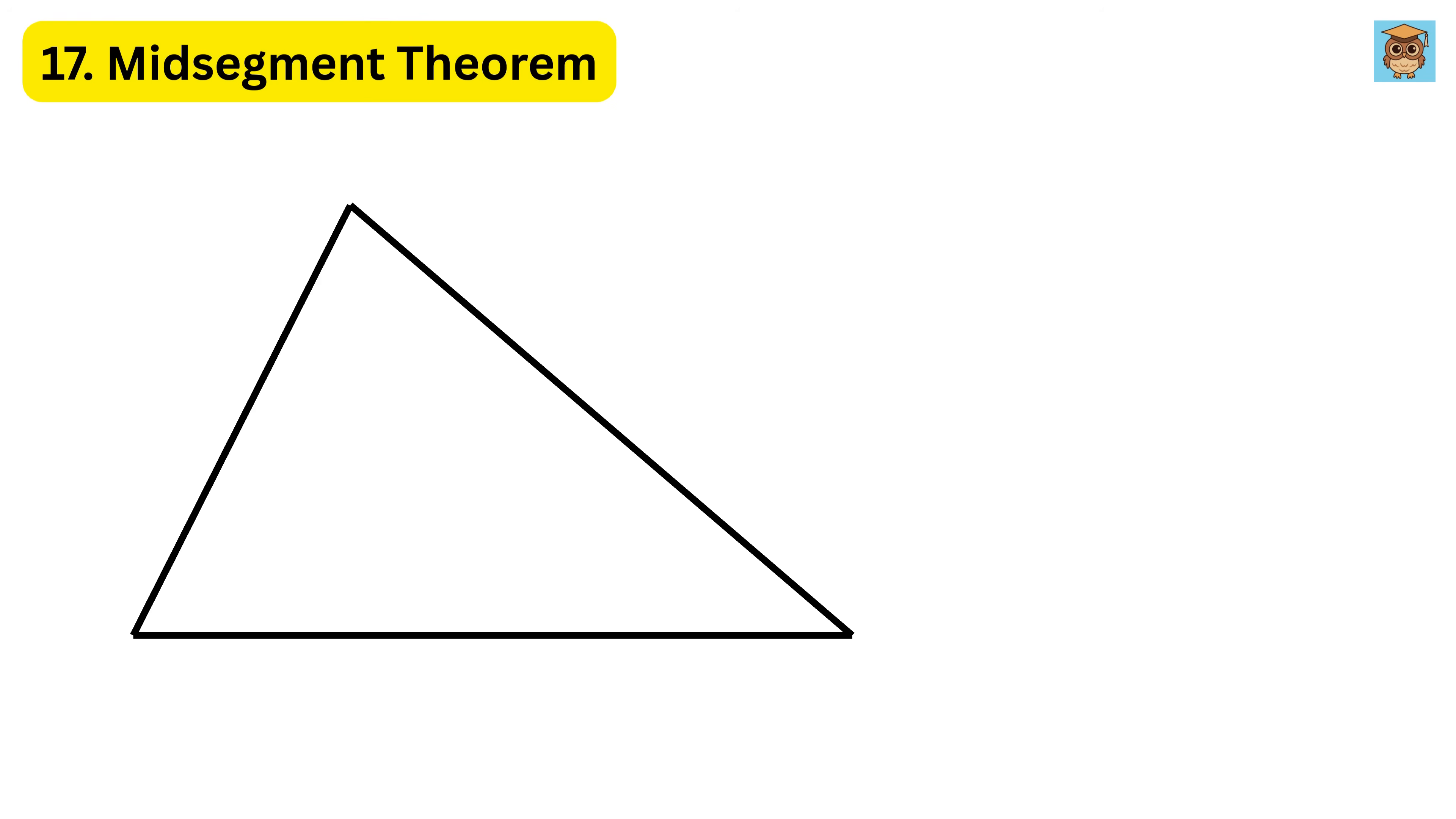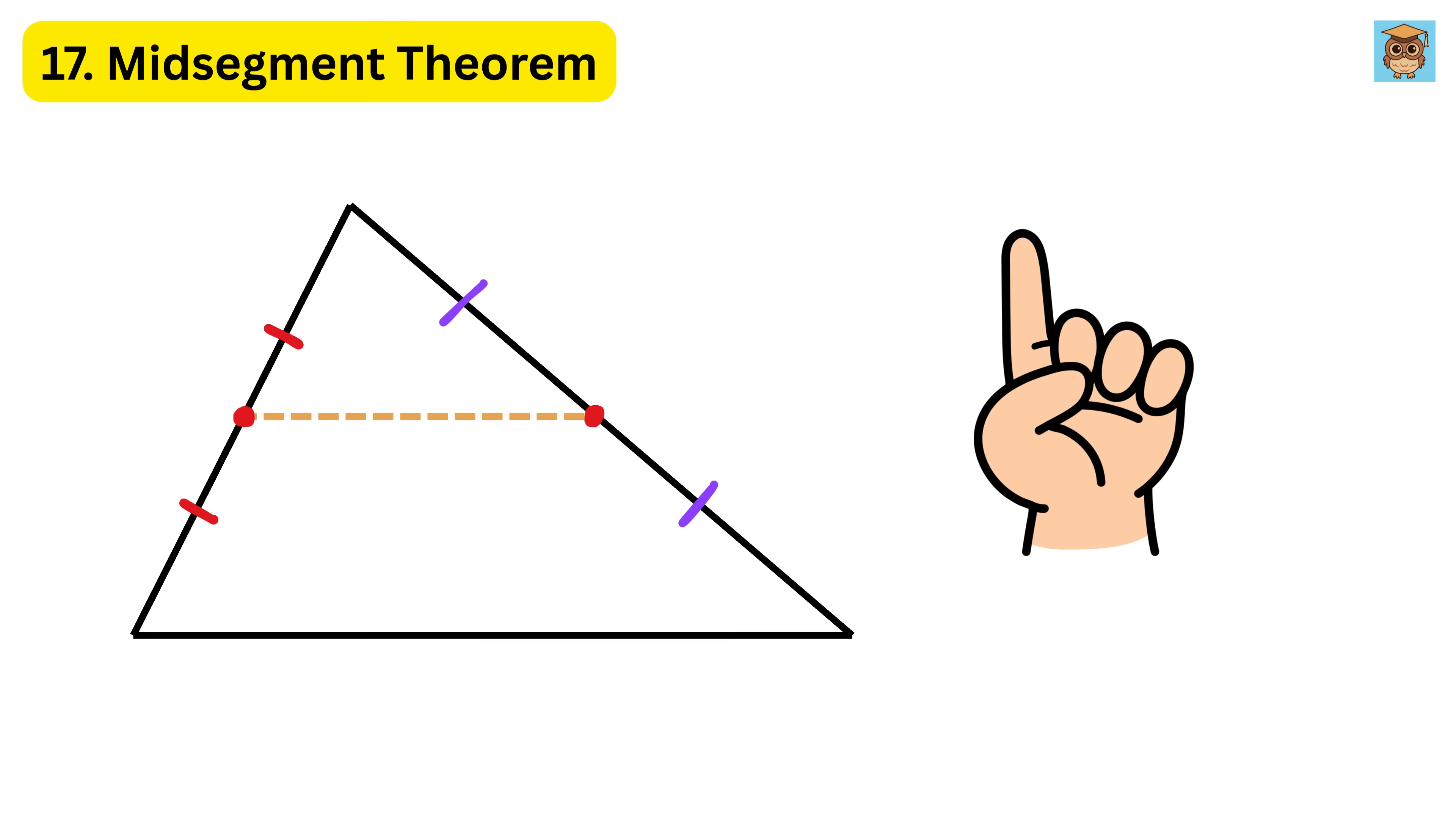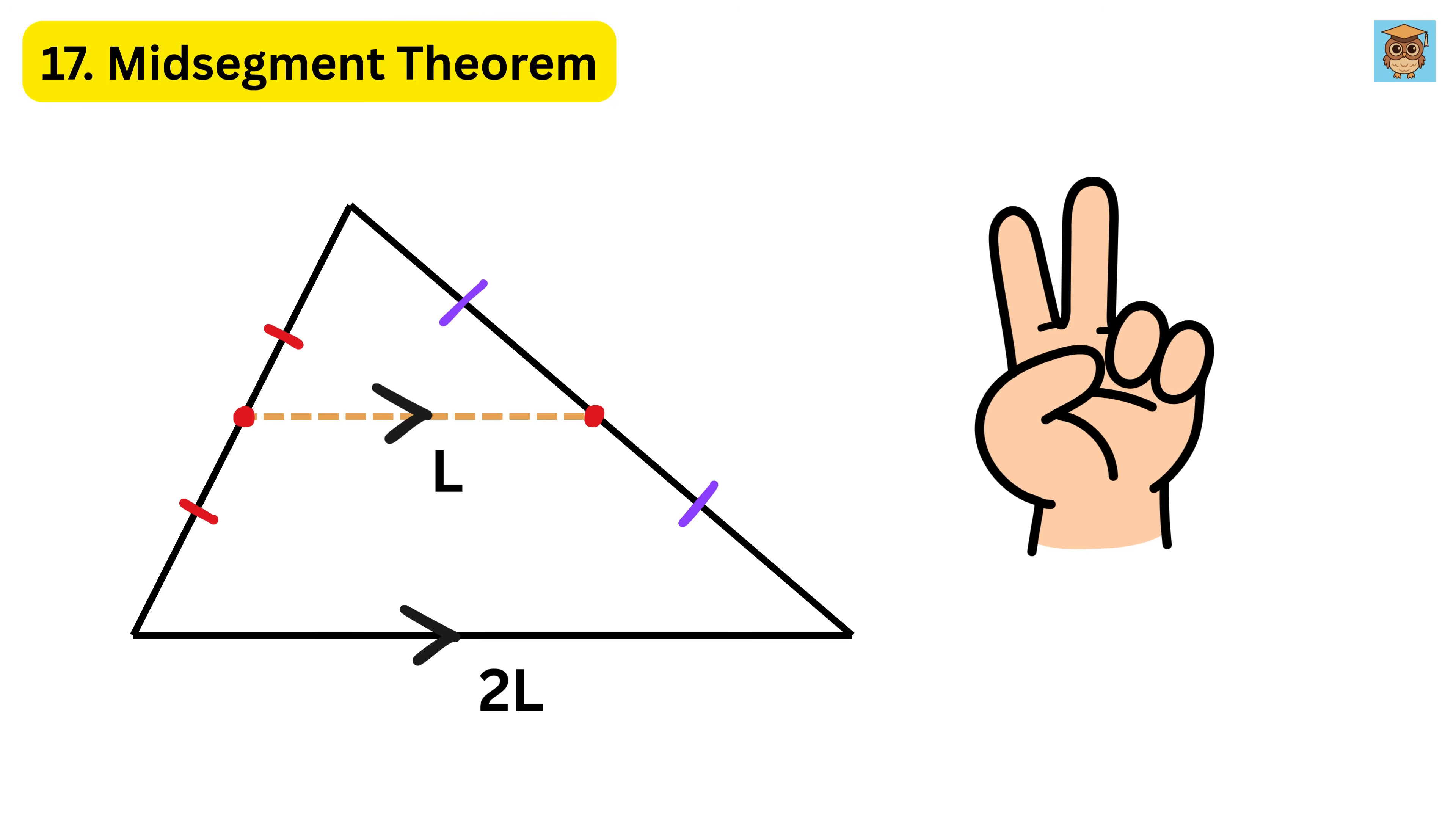17. Mid-segment theorem. It states that if you draw a line connecting the midpoints of two sides of a triangle, this line, called the mid-segment, has two special properties. First, it is parallel to the third side of the triangle. Second, its length is exactly half of the third side. This means the mid-segment creates a smaller, similar shape inside the triangle.